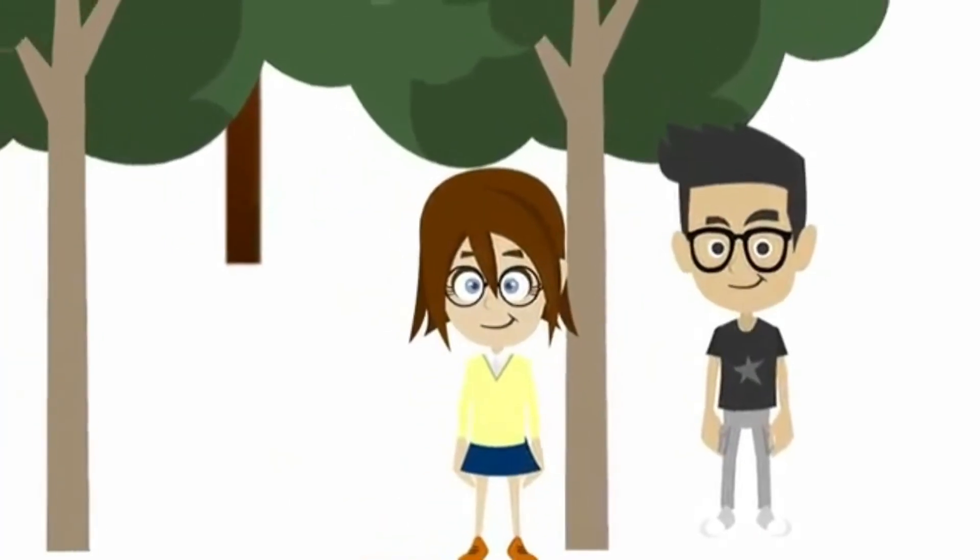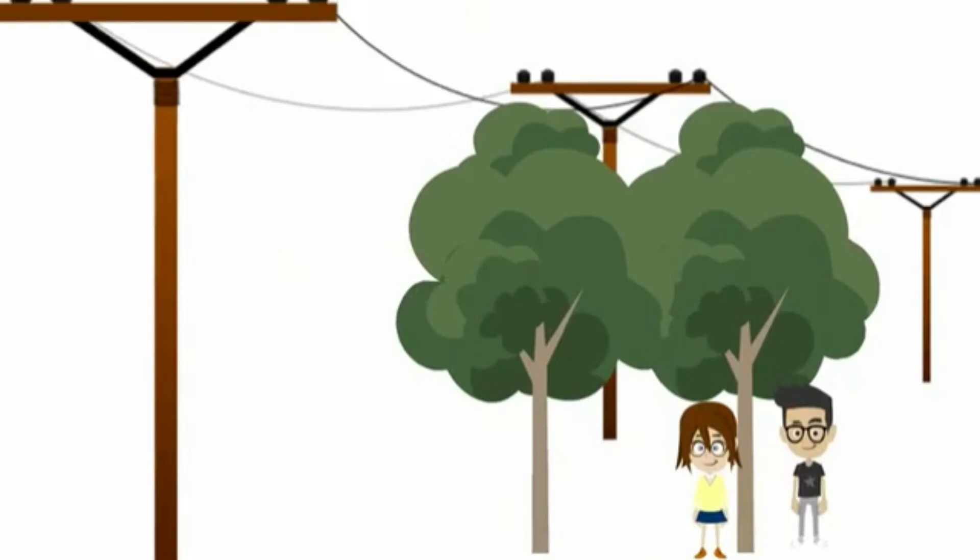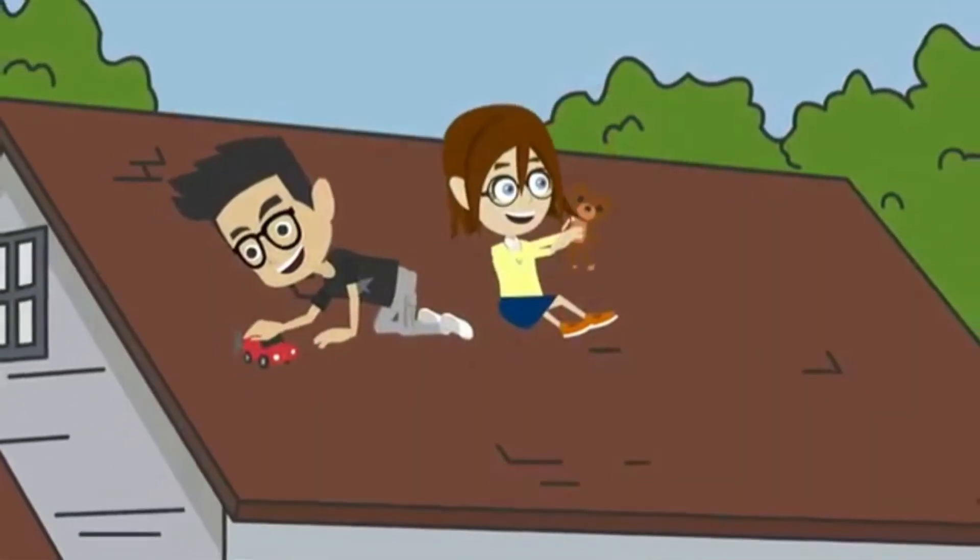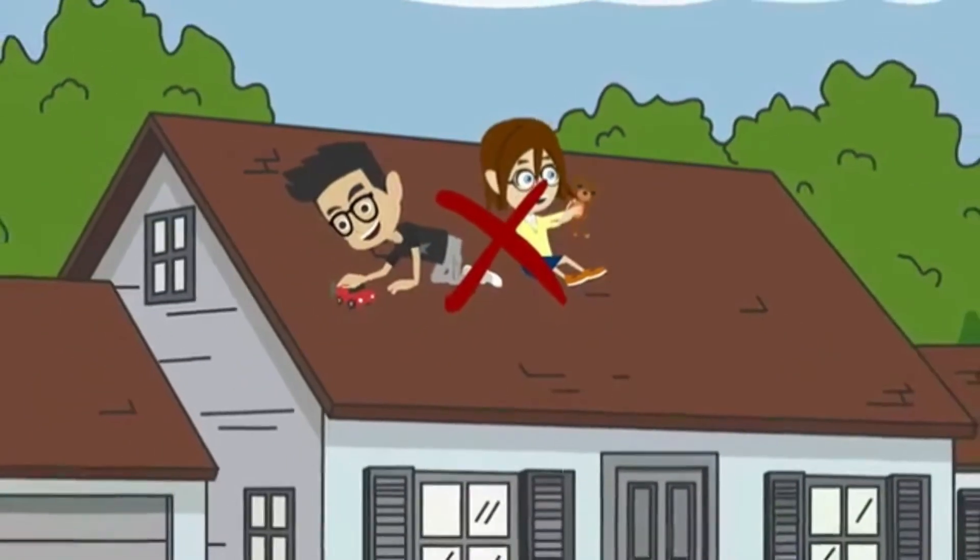Always look out for power lines before you climb a tree. Sometimes they are hard to see and electricity can go through a branch and into you. Never get on the roof to get your toy or play, as power lines attach to houses near the roof.